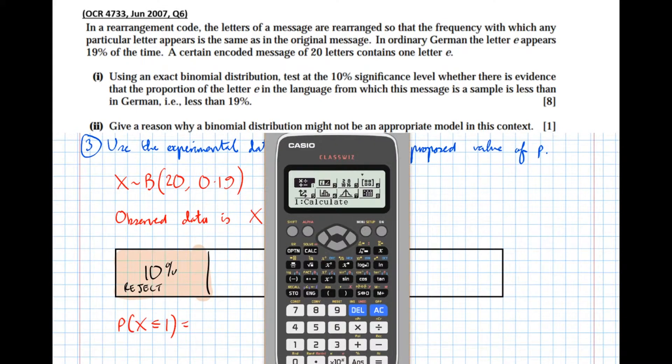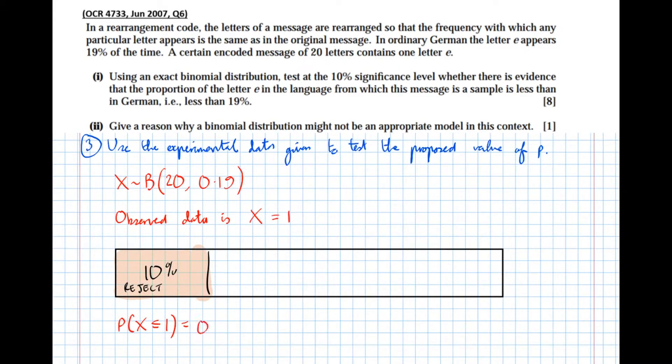There it is there. Menu, distribution, binomial cumulative distribution because we're doing a less than or equal to. Variable and the probability X is less than or equal to one, we'll pick 20 letters and there was a 19 chance of success, 19 percent chance of a letter being an e.